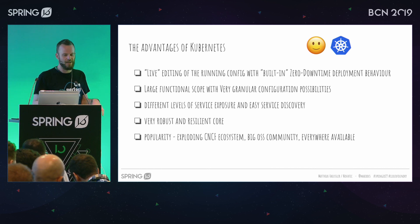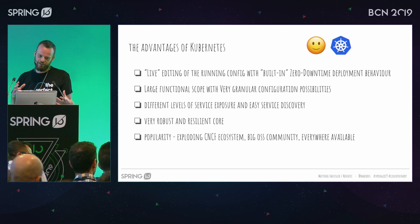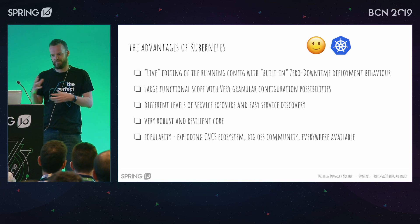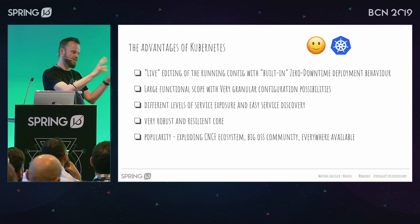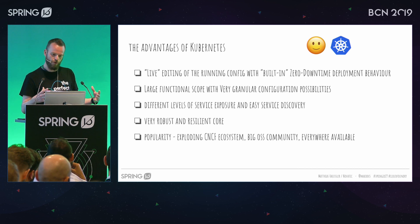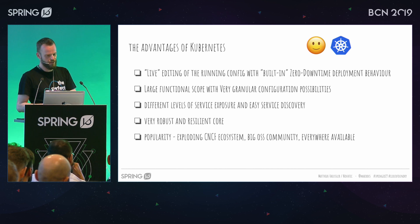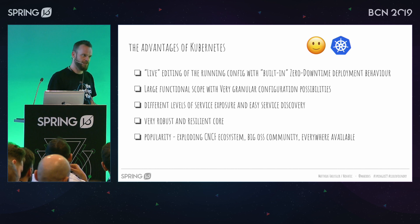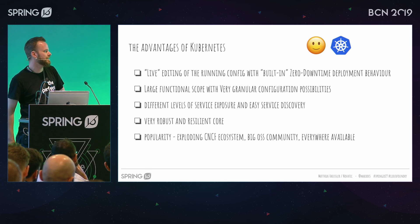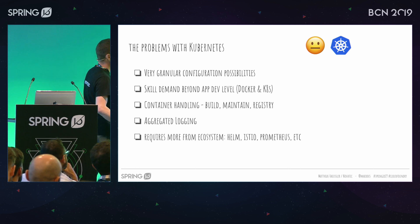Kubernetes has a large functional scope — I only scratched the surface given the time — and has very granular patterns. You have different levels of service exposure, which from a container scheduling perspective is an advantage over Cloud Foundry: you can say this one is only visible to others but not to the outside, which is also very good for security purposes. The core of Kubernetes is very robust and resilient — it came out of Google as their internal system. And of course high popularity: if you look at the CNCF ecosystem, there are thousands of products, the biggest OSS community, and it's pretty much available everywhere, even on Amazon.